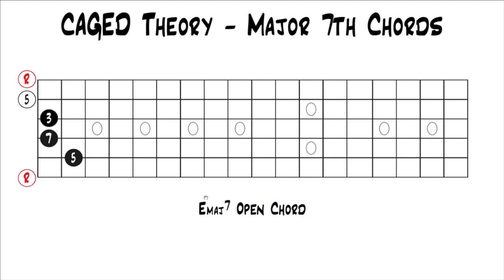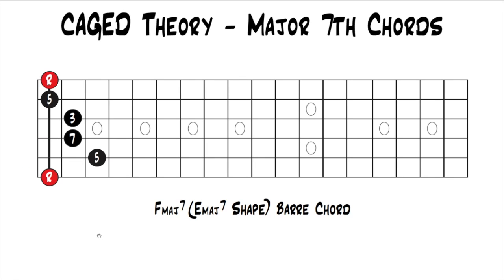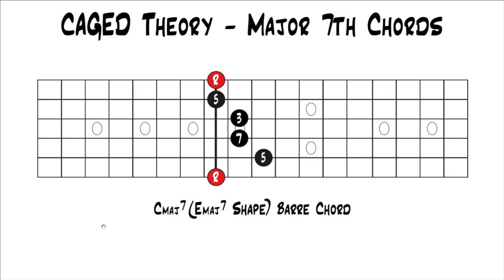Next one is E. This is an E major 7 open chord. If we move that up half a step, we end up with an F major 7 bar chord using the E major 7 shape, because now our roots are on F instead of E. This is a fairly common bar chord, pretty easy to play and pretty useful. It can be kind of a muddy chord, but it's still useful — definitely learn it if you don't know it. We can move this anywhere up the fretboard; if we move our lowest note to the 8th fret, we'd have a C major 7 bar chord using the E major 7 shape.